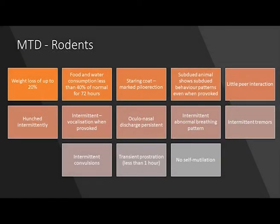Weight loss of up to 20%, food and water consumption less than 40% of normal for 72 hours. Staring coat, marked piloerection. Subdued animal shows subdued behavior patterns even when provoked, with little peer interaction. Intermittent vocalization when provoked. Oculonasal discharge persistent. Intermittent abnormal breathing pattern. Intermittent tremors. Intermittent convulsions. Transient prostration. No self-mutilation.